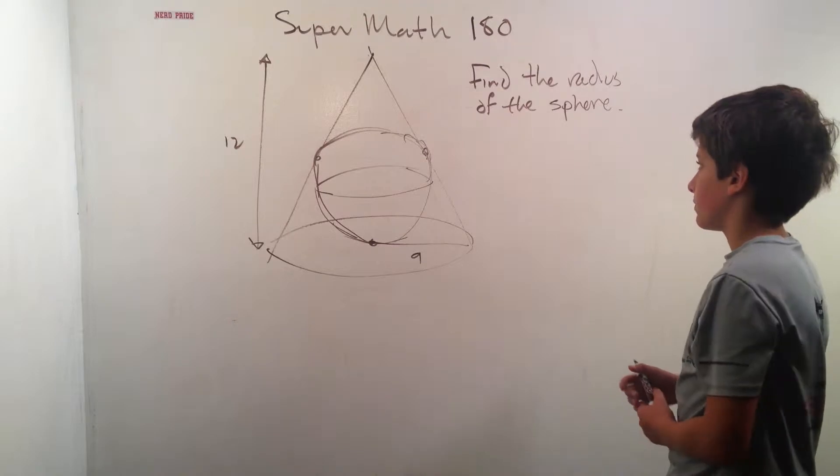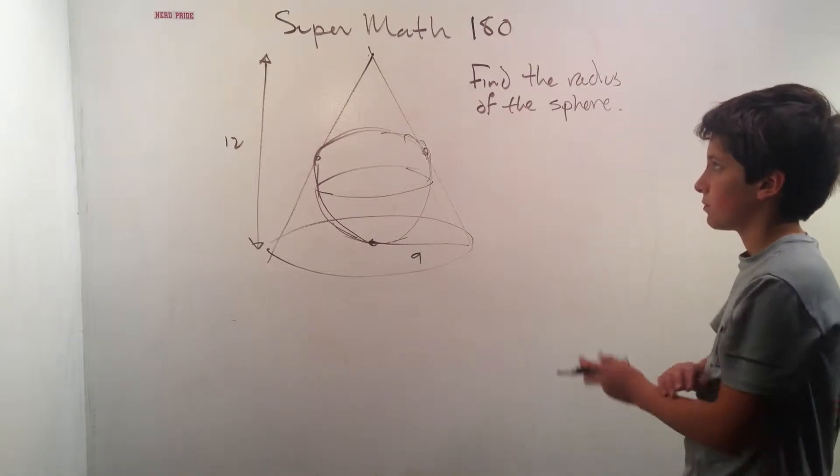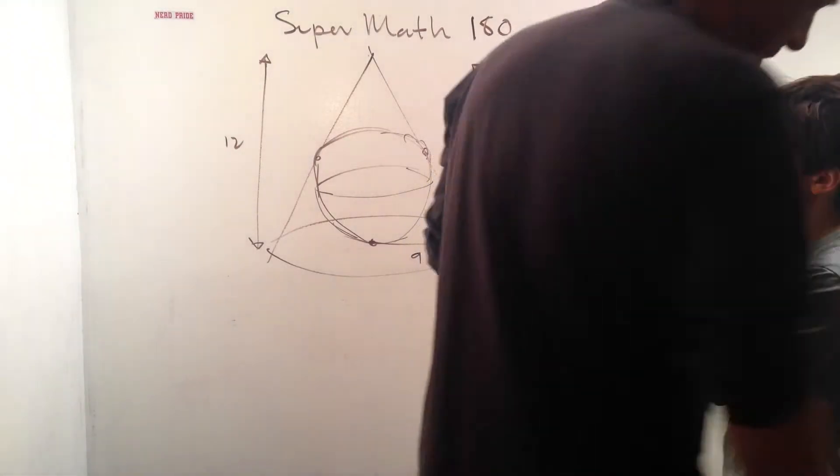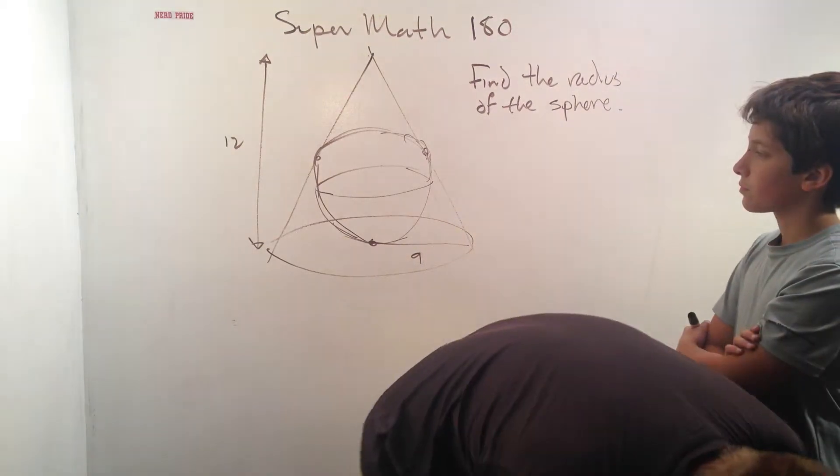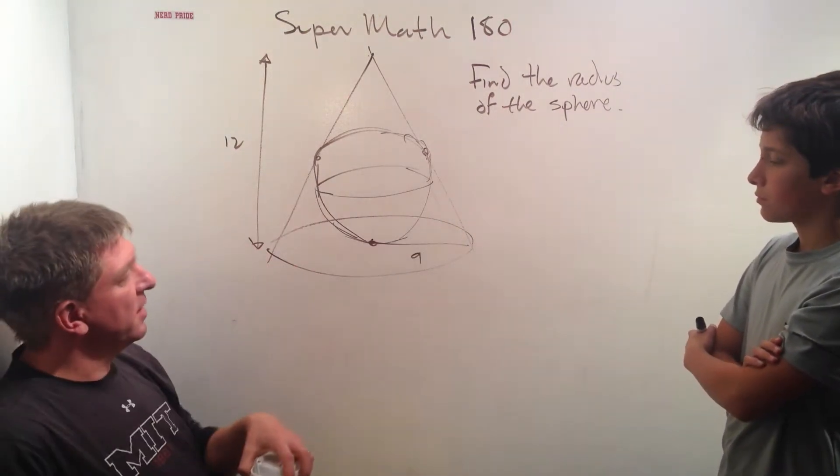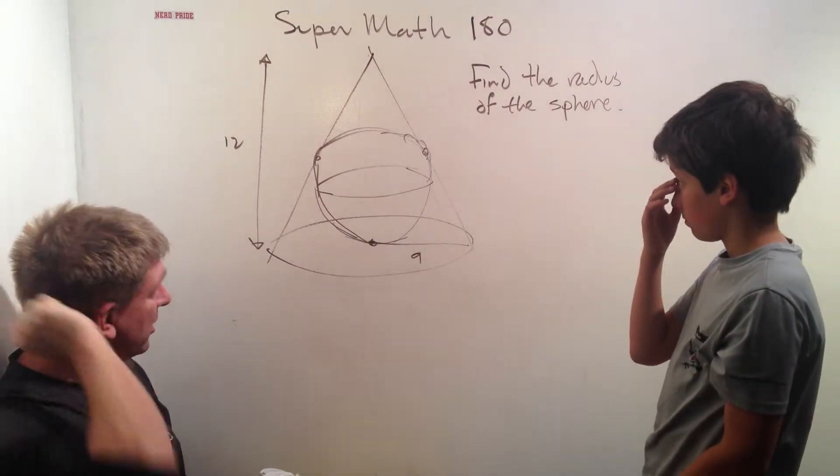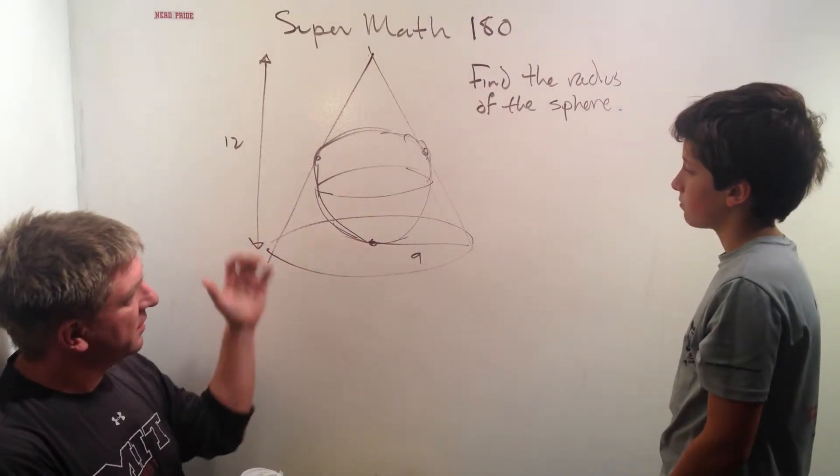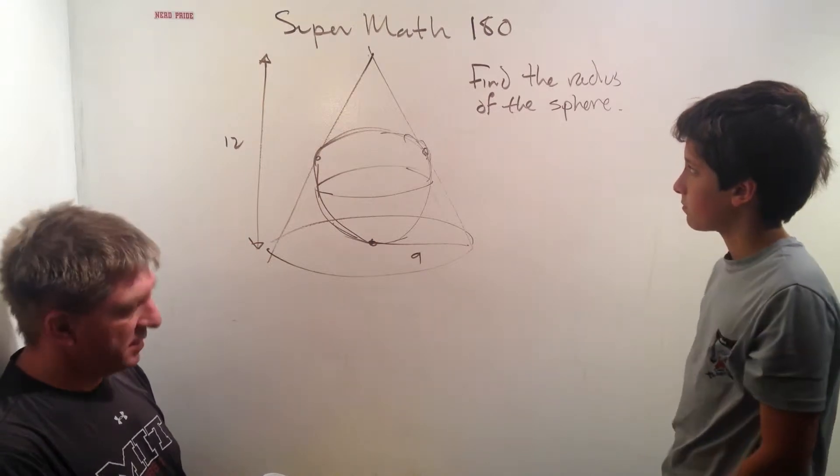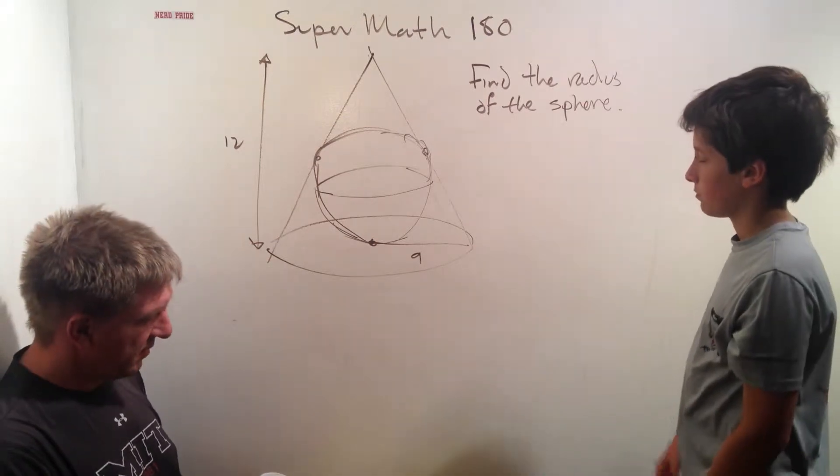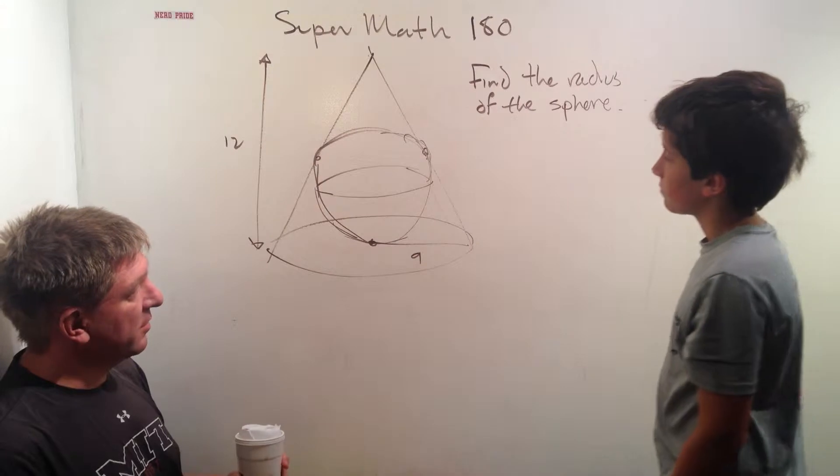We're in the review section, and we just did a problem of spheres inscribed in a box, and we moved on, and this next problem was about spheres inscribed in a cone. So, it says we've got a sphere inscribed in a cone, the radius of the cone is 9 and the height is 12. Find the radius of the sphere. Very interesting question.